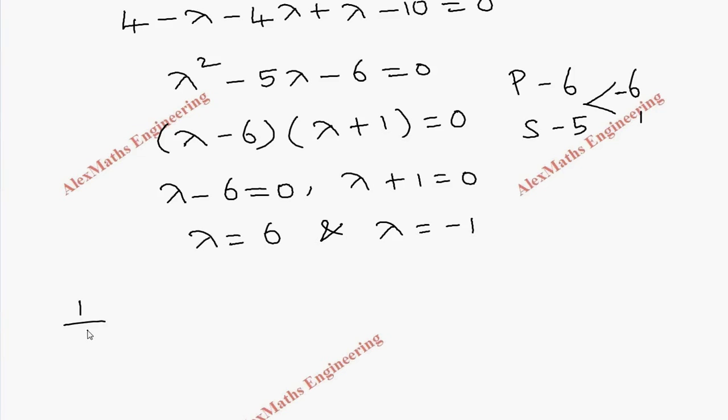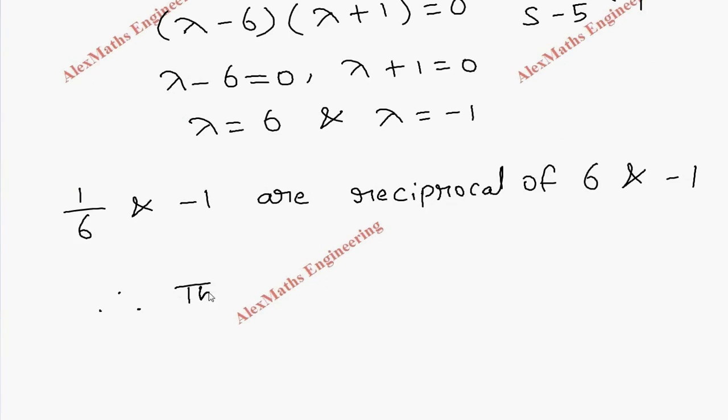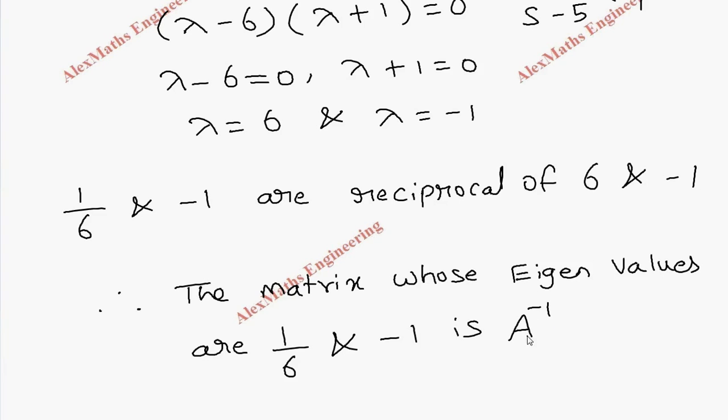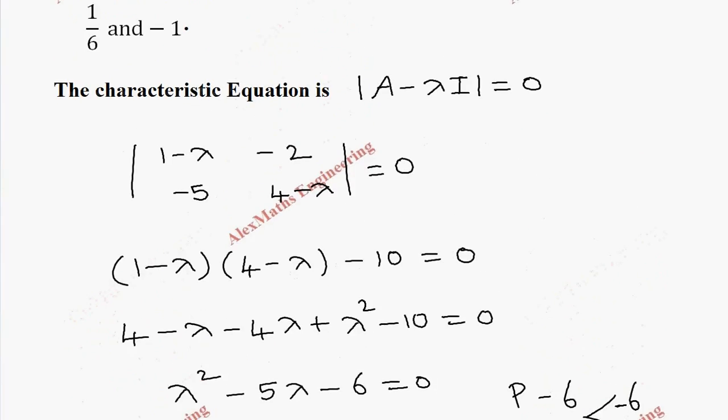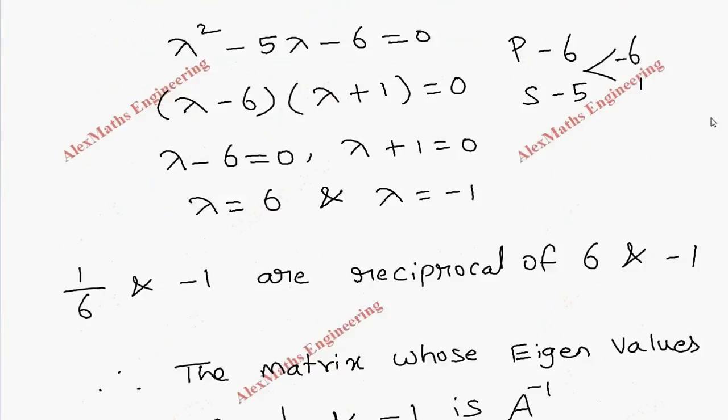The reciprocals of 6 and -1 are 1/6 and -1. Therefore, the matrix whose eigenvalues are 1/6 and -1 is A inverse, as per the property. Matrix A has elements 1, -2, -5, and 4.